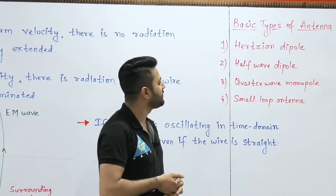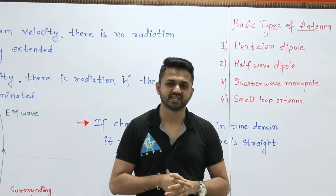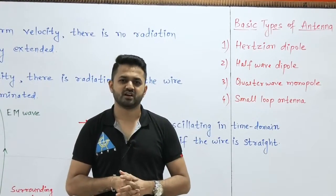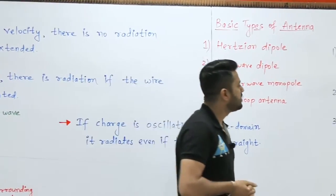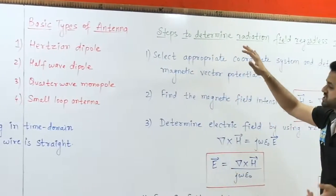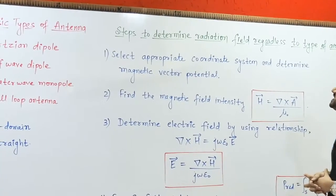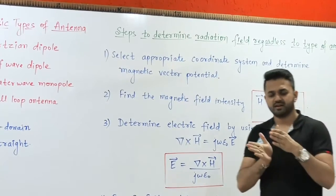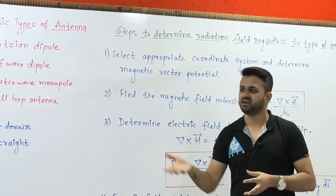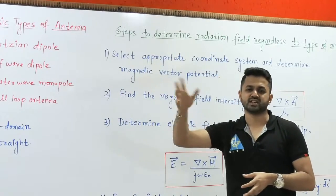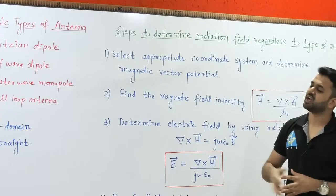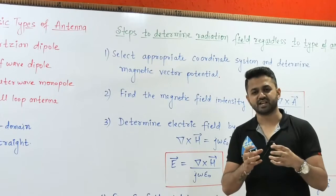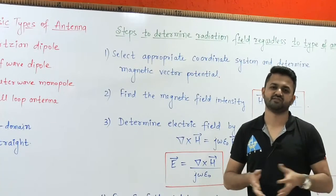For each type of antenna we will study the radiation, the magnetic field equation, and how much power it radiates. The last point in this introduction is: the steps to determine the radiation field regardless of the type of antenna. Even for antenna types beyond these four, you can follow these particular steps to determine the radiation field — meaning the equations of the electric field and the magnetic field.